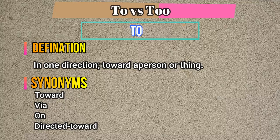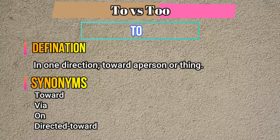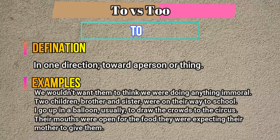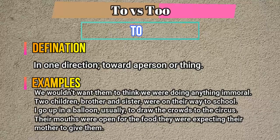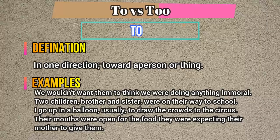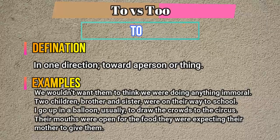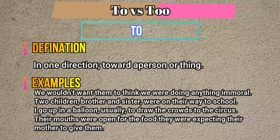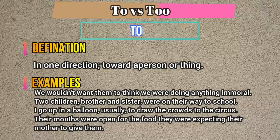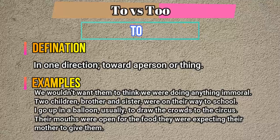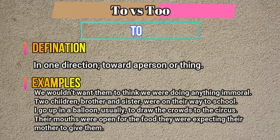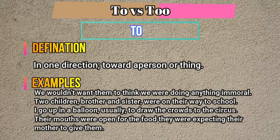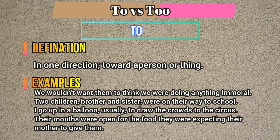And now let me show the examples of the word 'to' in sentences. We wouldn't want them to think we were doing anything immoral. Two children, brother and sister, were on their way to school. I go up in a balloon usually to draw the crowds to the circus. Their mouths were open for the food they were expecting their mother to give them.